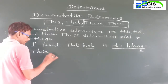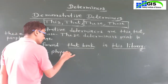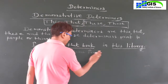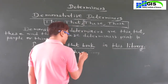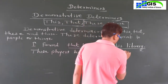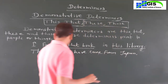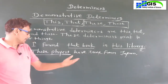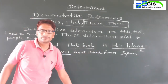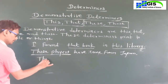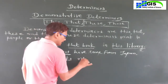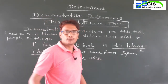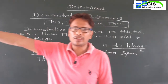Example: 'These players have come from Japan.' These players sitting on the benches come from Japan — 'these' is used because 'players' is plural and near. Another example: 'Those books are mine.' Those books are not near — they are far — so we use 'those'.